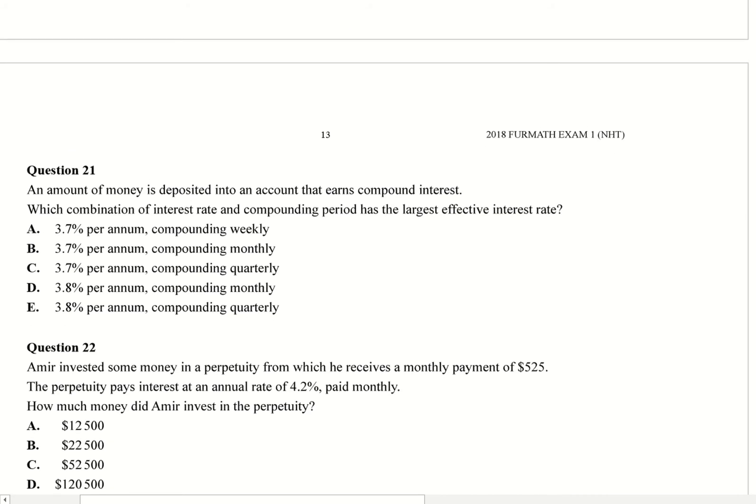All right, so let's look at the next question. An amount of money is deposited into an account that earns compound interest. Which combination of interest rate and compounding period has the largest effective interest rate?